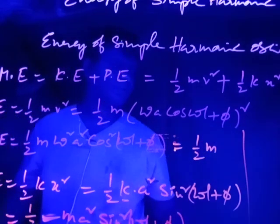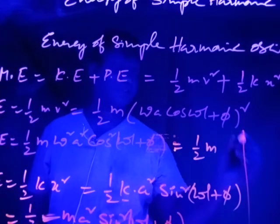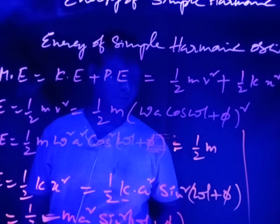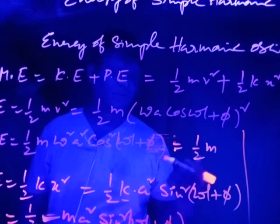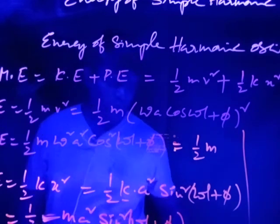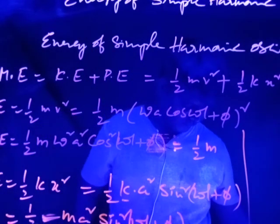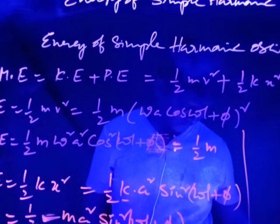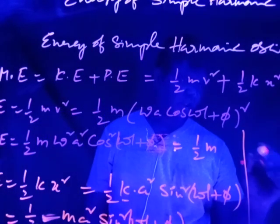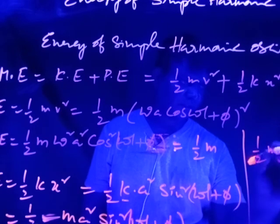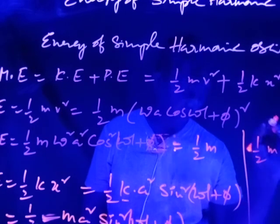Adding kinetic and potential energy, we use the identity sin²θ + cos²θ = 1. Therefore, the total energy of the simple harmonic oscillator equals ½mω²A².